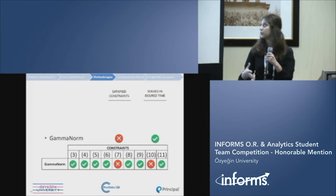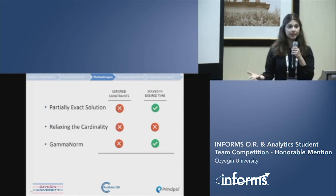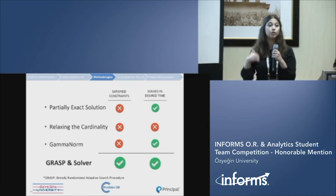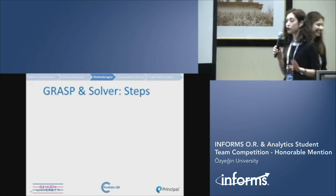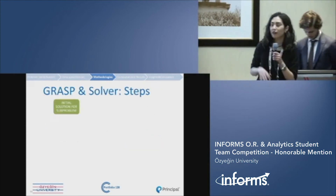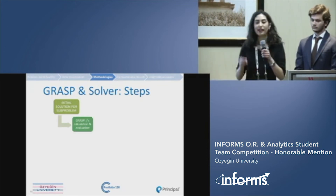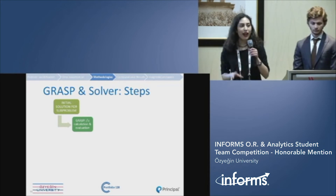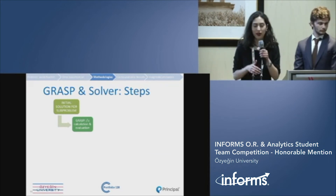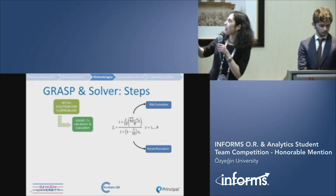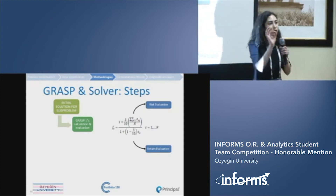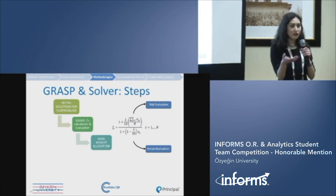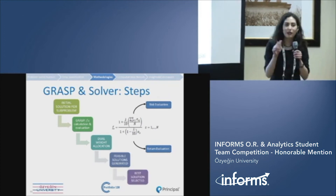But wouldn't it be great if there is a solution that satisfies all constraints and is solved in desired time? That is our method: GRASP+Solver. GRASP stands for Greedy Randomized Adaptive Search Procedure, and Solver came from Gurobi Solver. Our methodology consists of five steps. First, we send our assets to Gurobi with the MATLAB interface. Then, we use the FS value — a desirability criterion combining risk and return for each single asset, utilizing alpha, covariance, and lambda in one single parameter. Then, we do dual weight allocations and generate many feasible solutions, selecting the one with the best objective value.